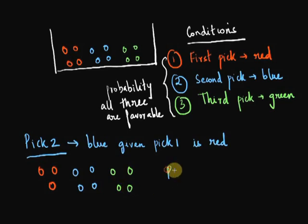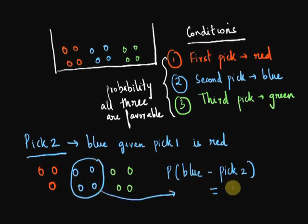So the conditional probability of a blue pick is favorable outcomes divided by total outcomes, which is 4 over 11. Four blue balls out of 11 balls in total.